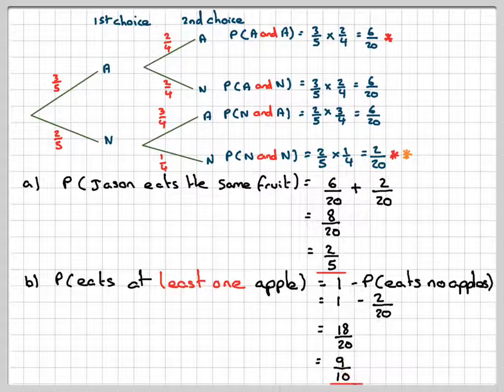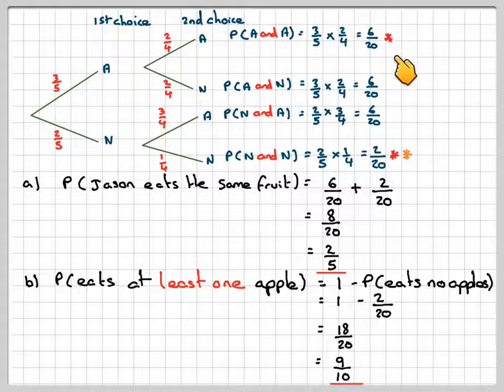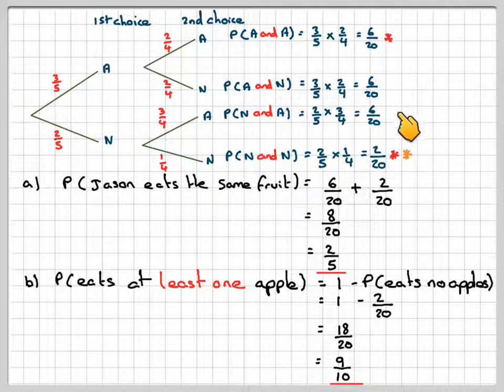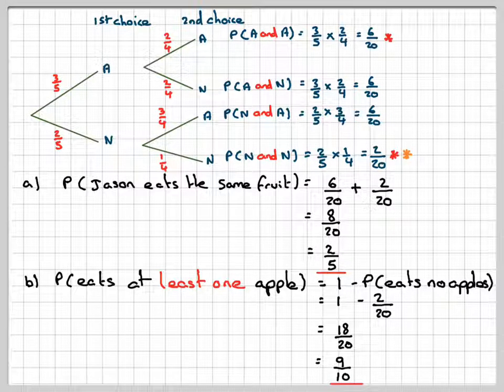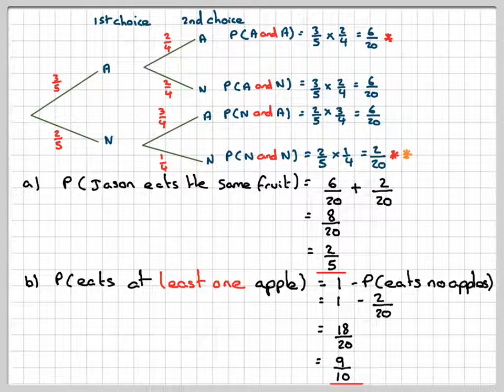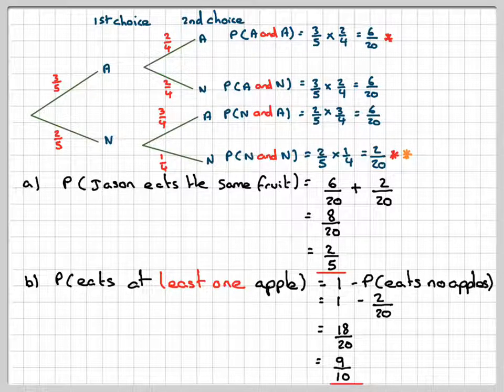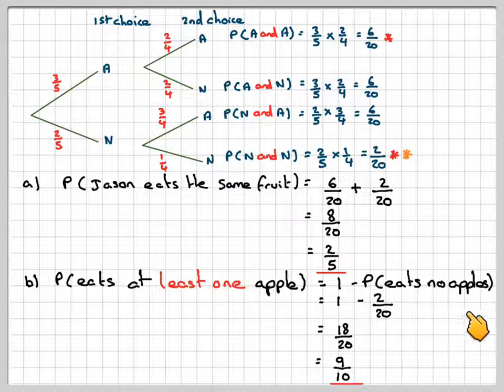Now you could have calculated part b by just adding these three up as well, but when the diagram is much more complicated it's far easier to use the idea one minus the probability that eats no apples.